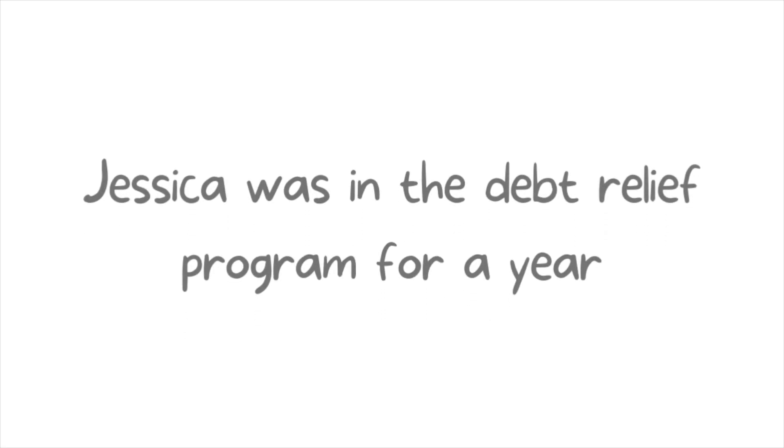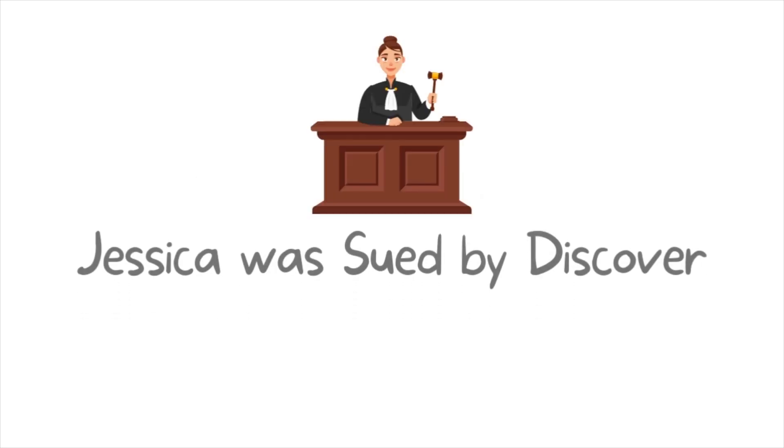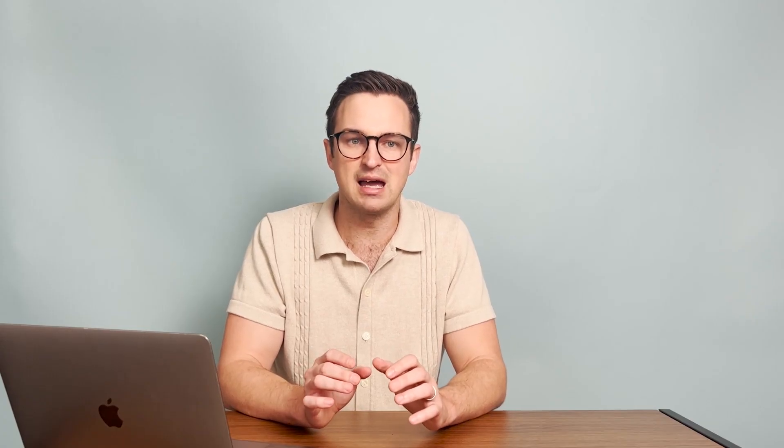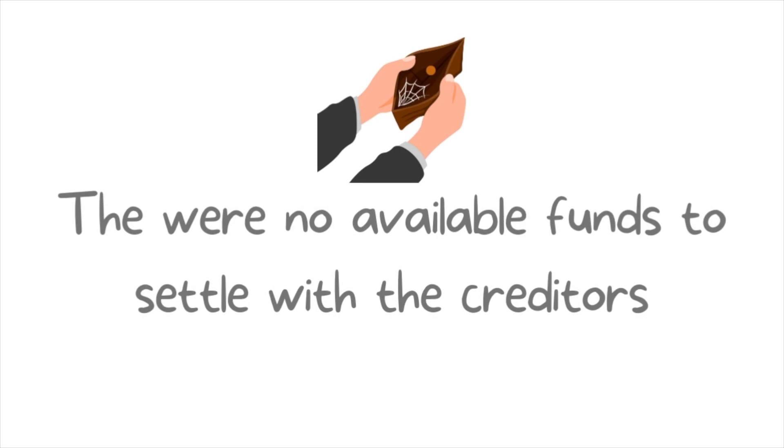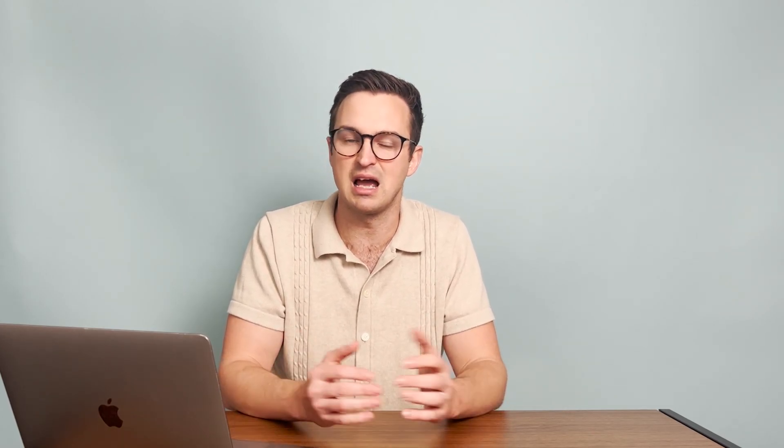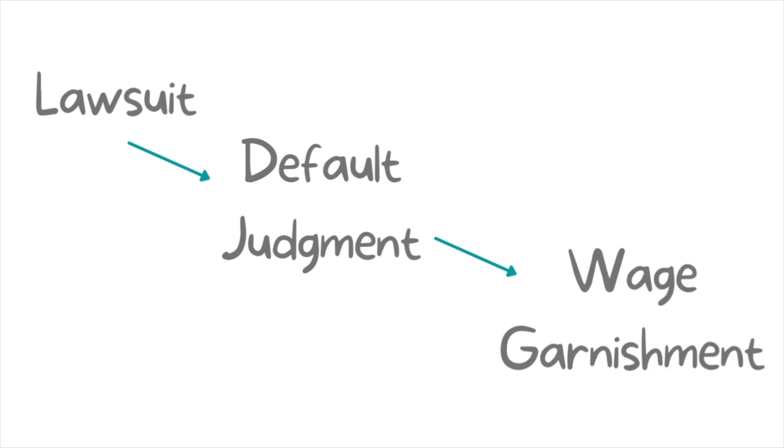So Jessica was in the debt relief program for about a year when she got sued by Discover. The problem was, was that the debt relief company didn't have any funds in her account at that time to settle the account. They had prioritized other debts that had a lower lawsuit likelihood. So in this case, most of the time it would go to default judgment that could change into wage garnishment.